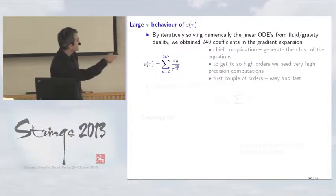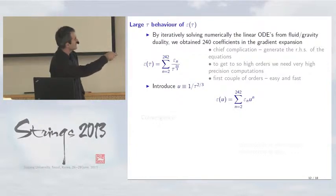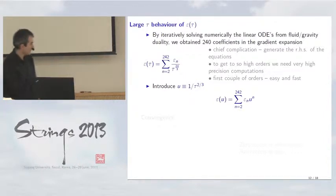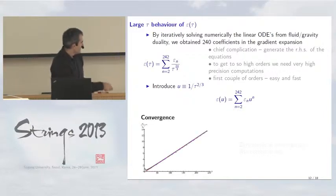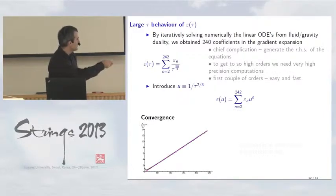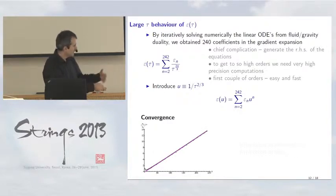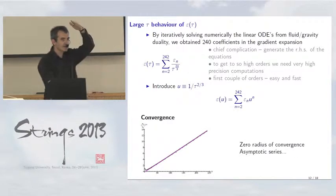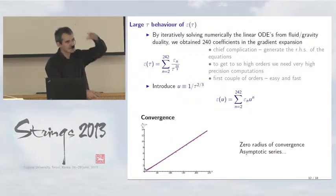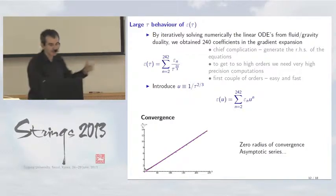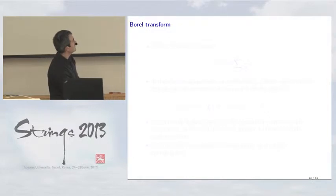The series has the structure of a power series in u = one-over-tau-to-the-two-thirds. Looking at the convergence, plotting one-over-n times the nth root of each coefficient, we see factorial growth, confirming zero radius of convergence. It appears to be an asymptotic series: including higher orders for fixed tau initially gives better agreement but then gets worse, which is expected. We can now examine the Borel transform to isolate what kind of singularities appear.